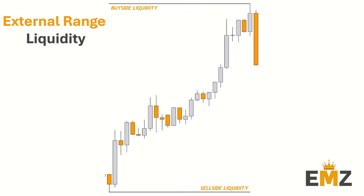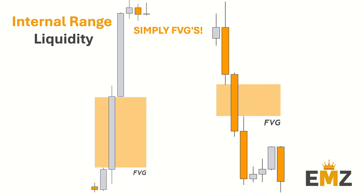The first thing we are going to do is define external range liquidity and internal range liquidity. External range liquidity is simply swing highs and swing lows in the form of sell side liquidity and buy side liquidity. Market seeking liquidity would be taking out our sell side or buy side liquidity. Internal range liquidity is simply fair value gaps — it can be order blocks, however I recommend you stick to fair value gaps as it is what works best.